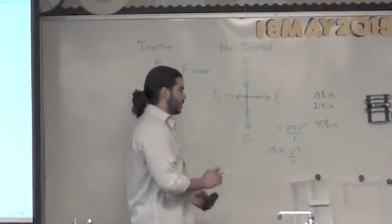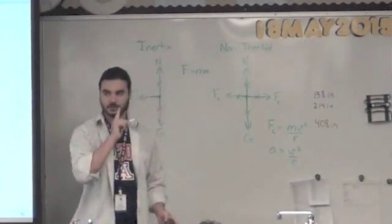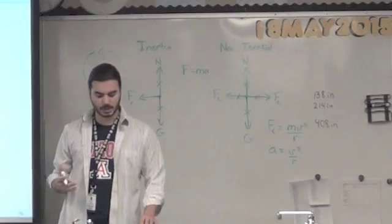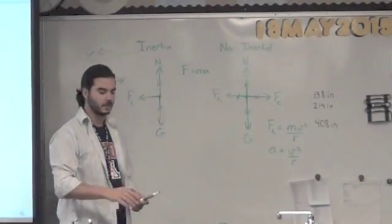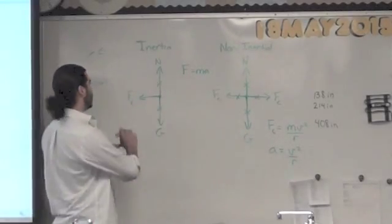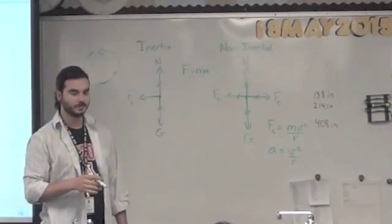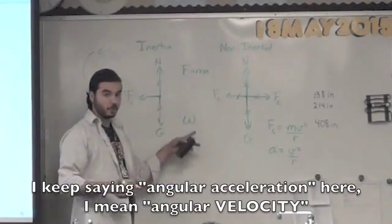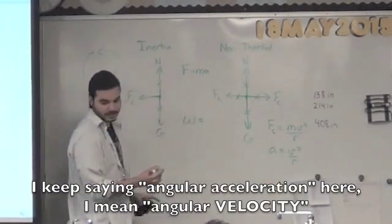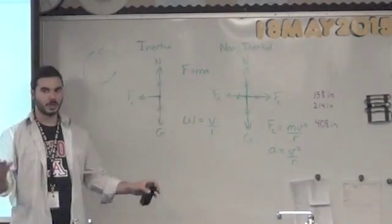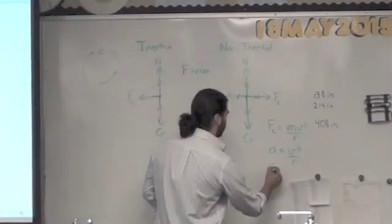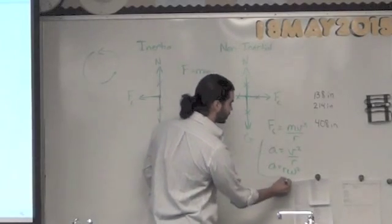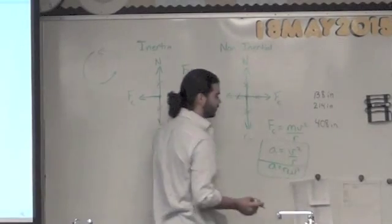The v in these equations means your tangential velocity — if you're traveling in a circle, your instantaneous tangential velocity is tangent to the circle. It's useful, but it's also really useful to have angular velocity. Angular velocity tells you how far along the circle you travel in any unit of time. Angular velocity is given by the variable omega (ω), and omega equals velocity divided by radius: ω = v/r. You can plug this into the acceleration equation: either a = v²/r, or equivalently a = rω².